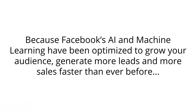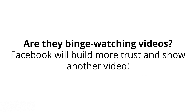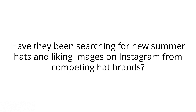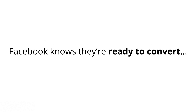Their AI knows who is most likely to take action. With all the pixel data, Facebook knows which of their users spend the most money and which users don't spend a dime online. Facebook knows when and where they are most likely to take action — for example, with basic time, device, and location info, Facebook knows when your audience is at home on their iPad where they do all their shopping, versus when they're at work on their desktop where they never purchase online. And their AI knows what your audience is most likely to take action on next. Are they binge watching videos? Facebook would show another video. Have they been searching for summer hats and liking images of summer hats on Instagram? Facebook can tell they're farther along in the buying cycle and ready to convert.